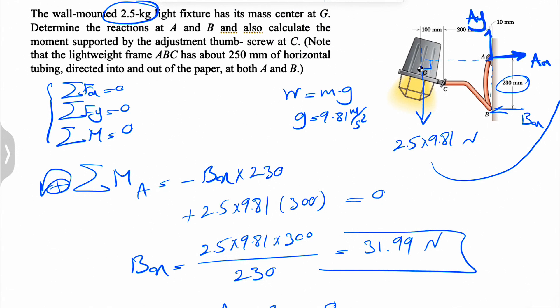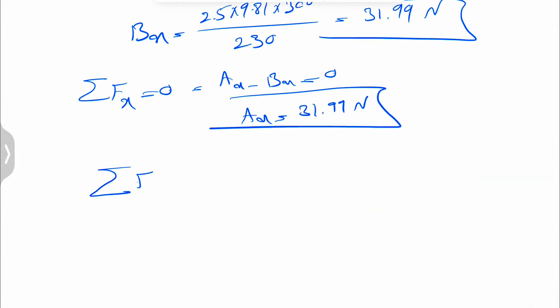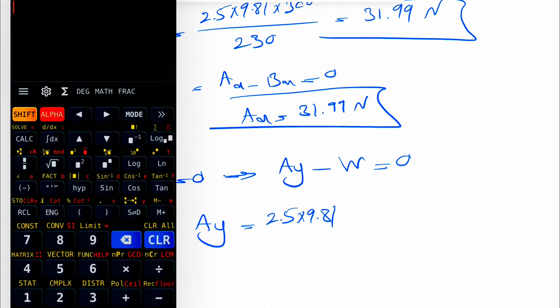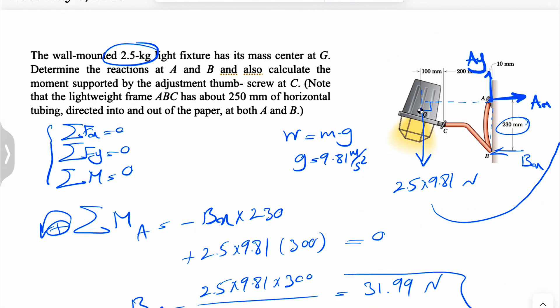And last one, just do the sum of all forces in Y equals zero and AY minus the weight equals zero and AY would be 2.5 times 9.81. Let's calculate this. This is going to give us 24.53 Newtons. So, so far we found all the reactions at A and B.